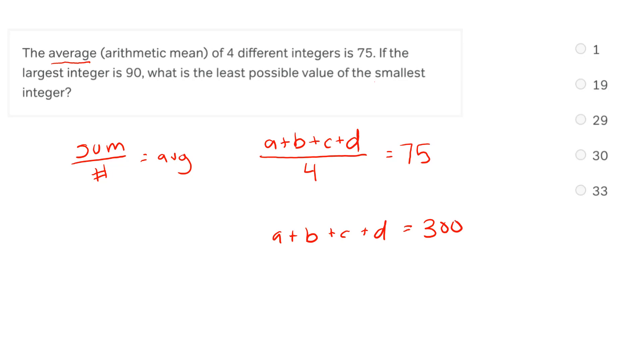Continuing, if the largest integer is 90. Okay, so we've got some max language with largest, so that's going to be important to note. I'm going to go ahead and decide that my largest integer is d, and I'm just going to put in 90 for it. Okay, so because this is the largest integer, I know that a, b, and c are not going to be larger than 90. Great. That's important information.